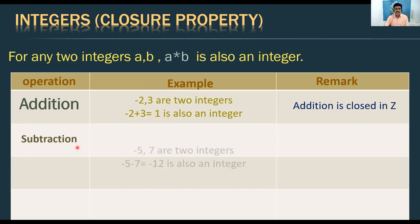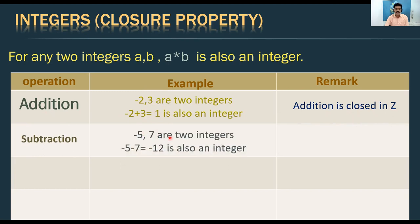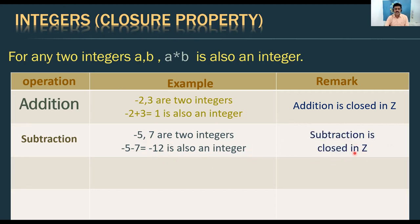For subtraction in integers: take −5 and 7. −5 − 7 = −12. Since negative numbers exist in the set of integers, −12 is an integer. Two integers taken, result is an integer — subtraction is closed in Z. Closure property is satisfied.